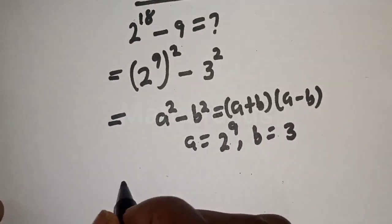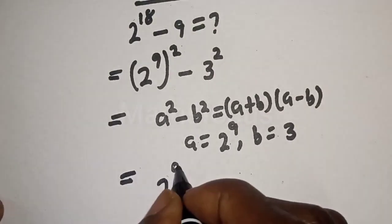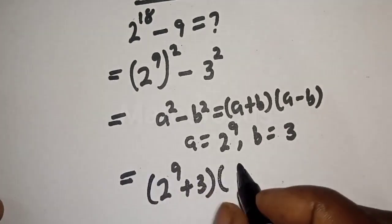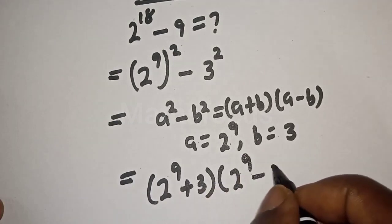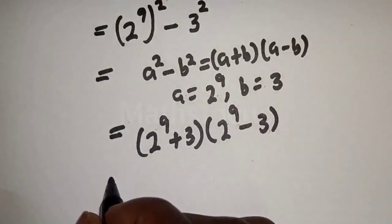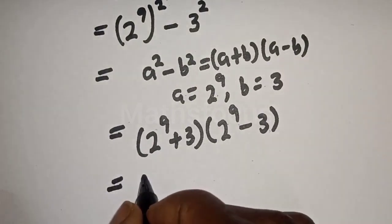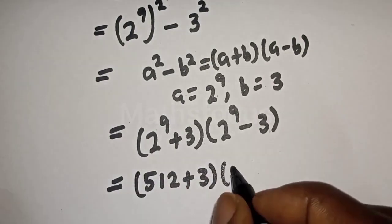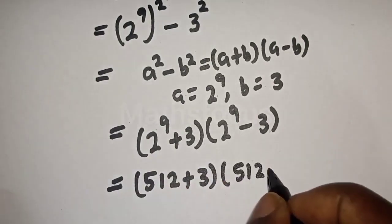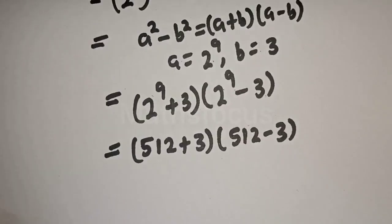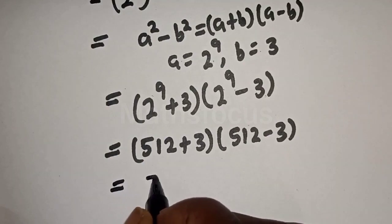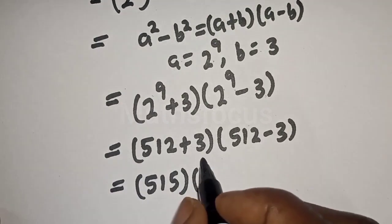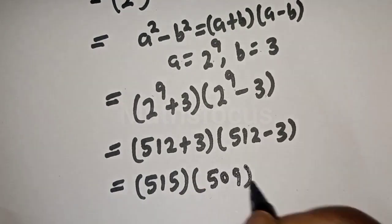Let's see, this is equal to 2 raised to power 9 plus 3, bracket 2 raised to power 9 minus 3. And this is equal to 2 raised to power 9 is 512 plus 3, bracket 512 minus 3. Then 512 plus 3, this is 515, bracket 512 minus 3, this is 509.